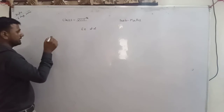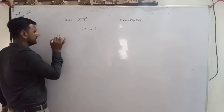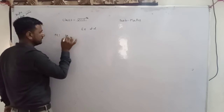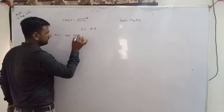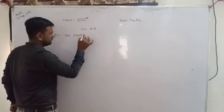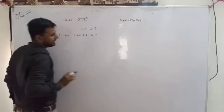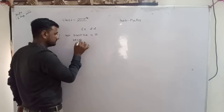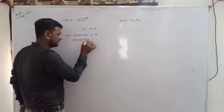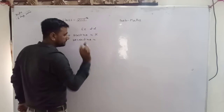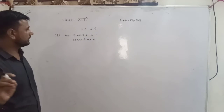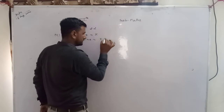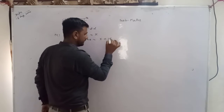तो अपने पास 2 number है। First number अपने let करेंगे x। तो second number क्या हो जाएगा? Second number जो है वो first number से 15 ज्यादा है, तो यह हो जाएगा x plus 15।